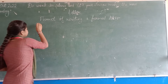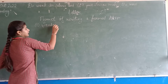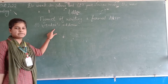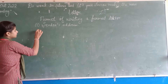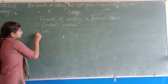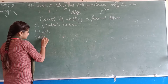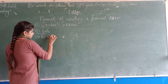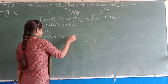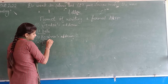The first step to write a formal letter is the sender's address. First of all we will write the sender's address, then we leave one line and write the date. Then we leave one more line and the third step is to write the receiver's address. Then leave one line and the fourth step is the subject.